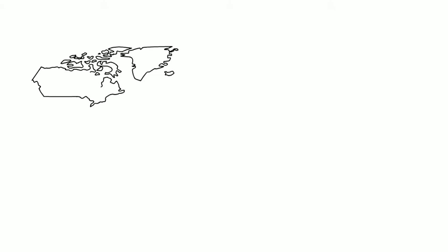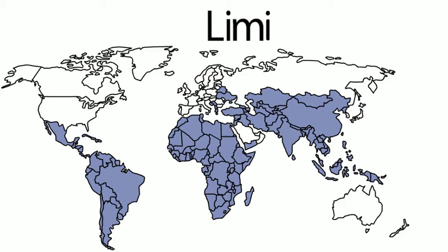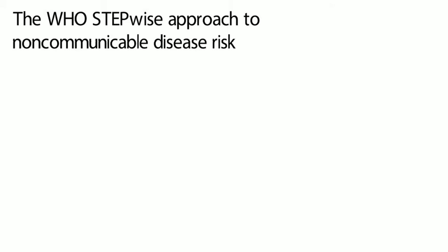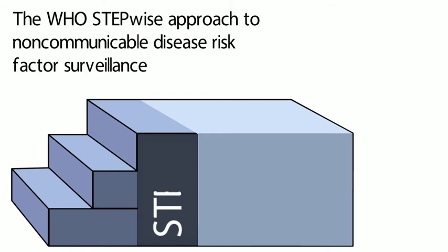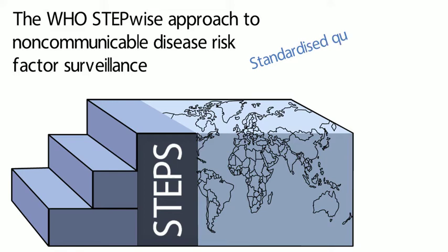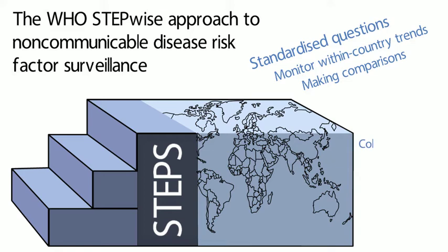Low and middle income countries sometimes find it a challenge to conduct surveillance for chronic diseases because of a lack of resourcing or technical ability and expertise. To assist these countries, the WHO has developed what is called the Stepwise Approach to Surveillance, or STEPS for short. STEPS provides an entry point for low and middle income countries to get started on chronic disease surveillance and to develop evidence on which to base response actions. By using the same standardised questions, all countries can use STEPS information to not only monitor within-country trends, but also for making comparisons across countries and across time. The approach encourages the collection of small amounts of high quality and useful information on a regular and continuing basis.